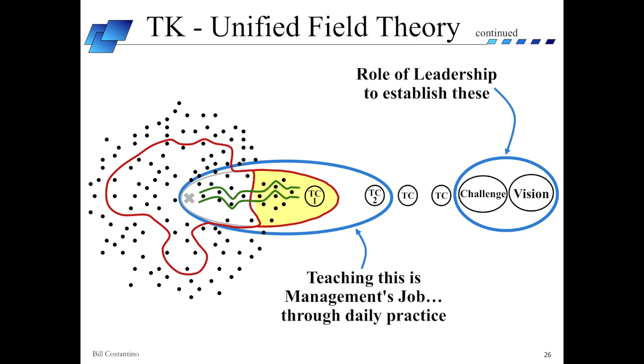Establishing the longer-term vision and challenge is the role of leadership in organizations. Only the senior leaders can set the strategic direction for the company. Teaching how to use the improvement Kata to methodically move through the gray zone toward the next target condition, that's the job of managers at all levels in the organization.